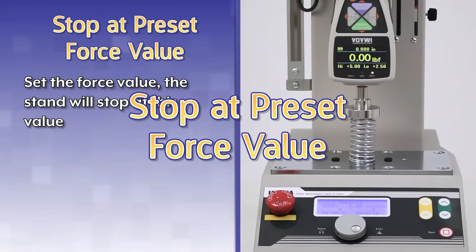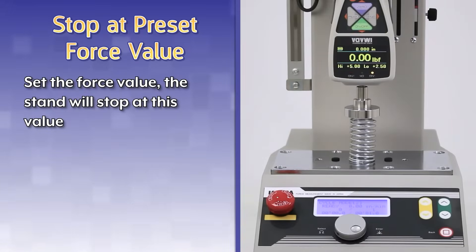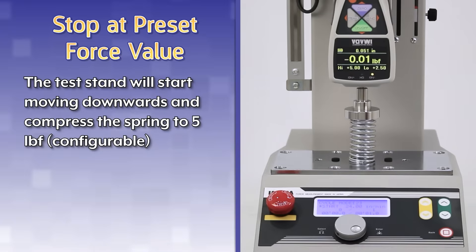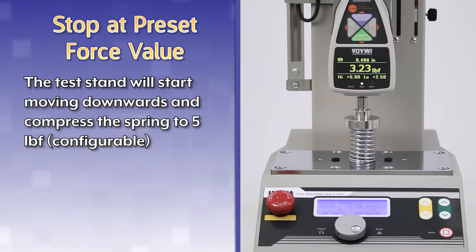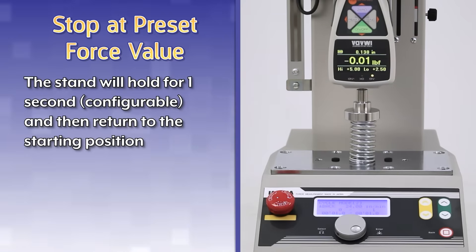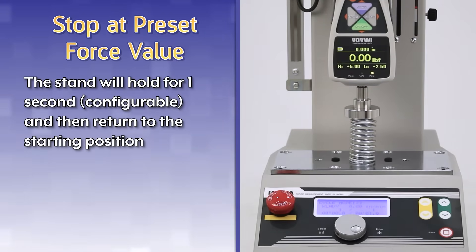Stop at preset force value. Set the force value; the stand will stop at this value. The test stand will start moving downwards and compress the spring to 5 pounds force, configurable. The stand will hold for one second, configurable, and then return to the starting position.